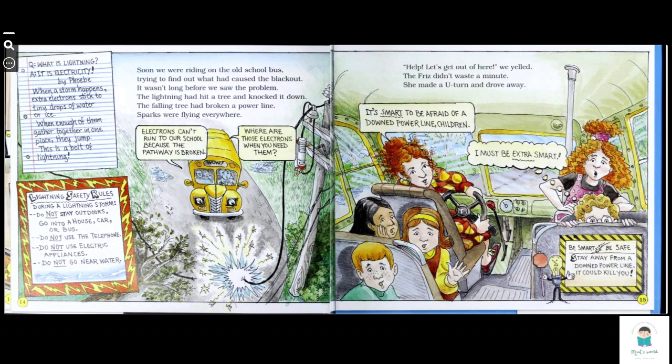What is lightning? It is electricity. When a storm happens, extra electrons stick to the tiny drops of water or ice. When enough of them gather together in one place, they jump. This is a bolt of lightning.